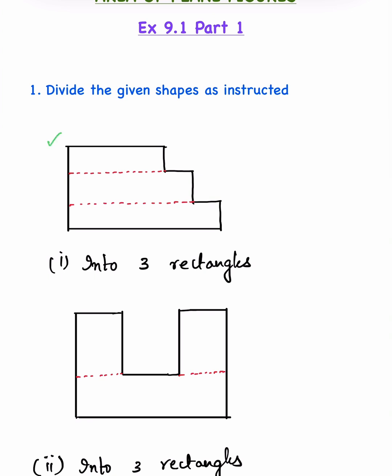This is the given figure and we have to divide it into three rectangles. By drawing these red lines, we can divide the figure into the first rectangle, second rectangle, and third rectangle as instructed. So by drawing these red lines, we have successfully divided the given shape into three rectangles.